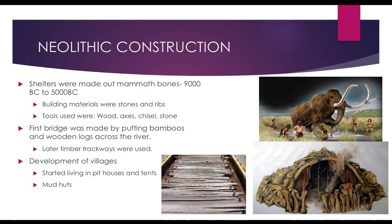Neolithic construction — 'neo' means new, 'lithic' means stone, so this is the New Stone Age. Human beings used to hunt animals like mammoths — a giant elephant — and use their bones for construction of houses. This mammoth bone construction was the very first construction by human beings, done around 9000 BC to 5000 BC. Building materials used were stones, ribs, and bones of huge animals. Tools were mostly wooden axes and chisels. The first bridges were made by putting bamboo or wooden logs across a river.